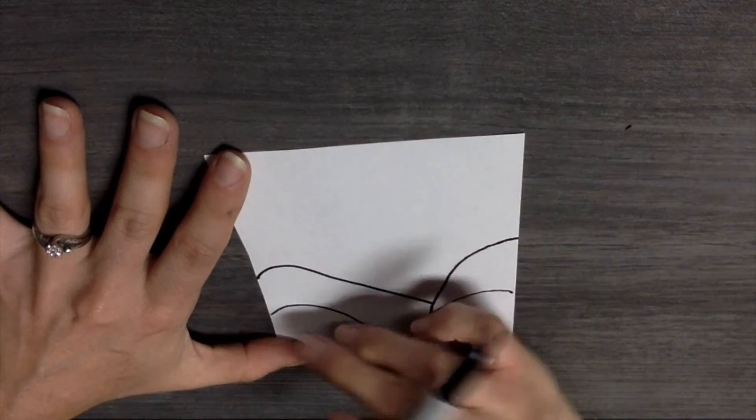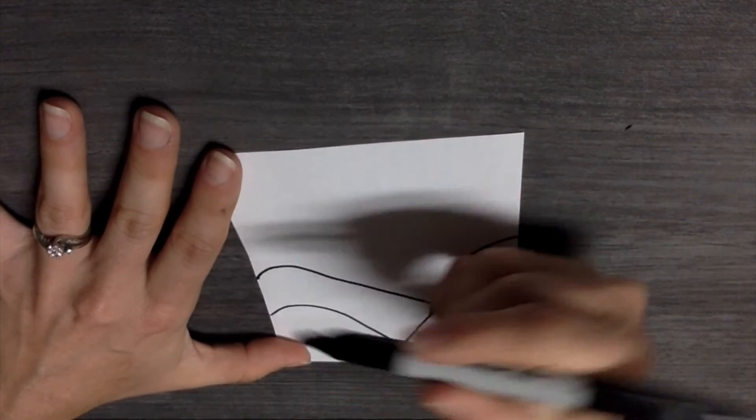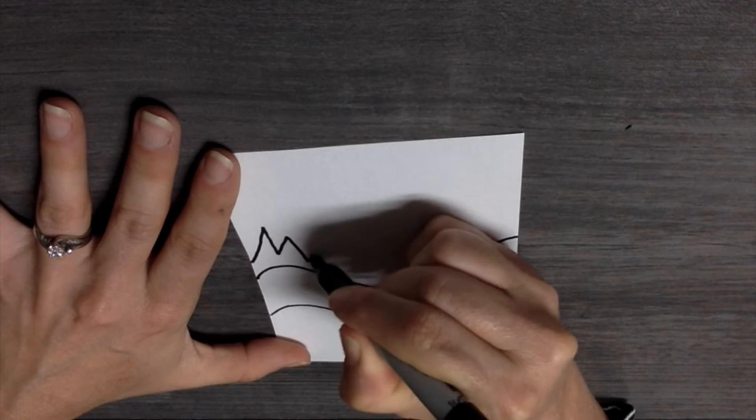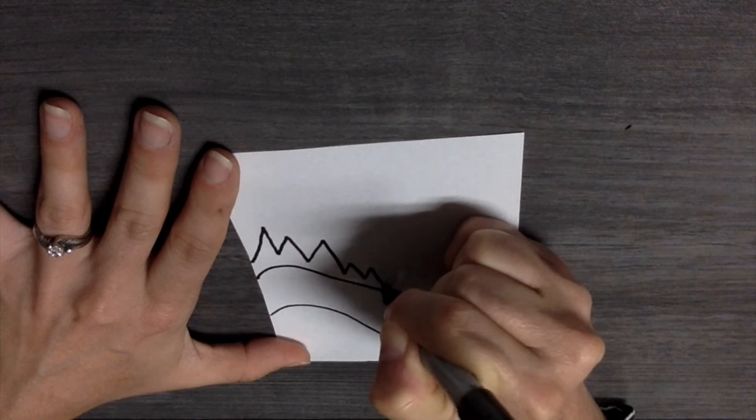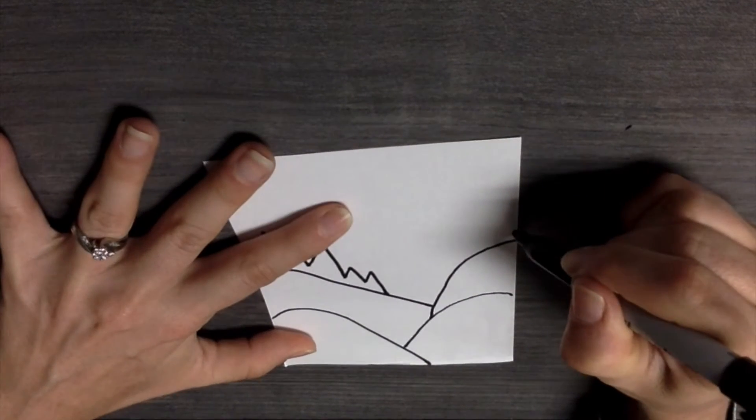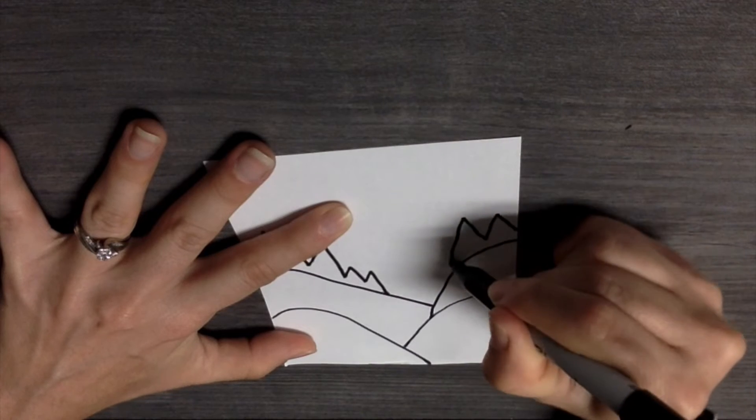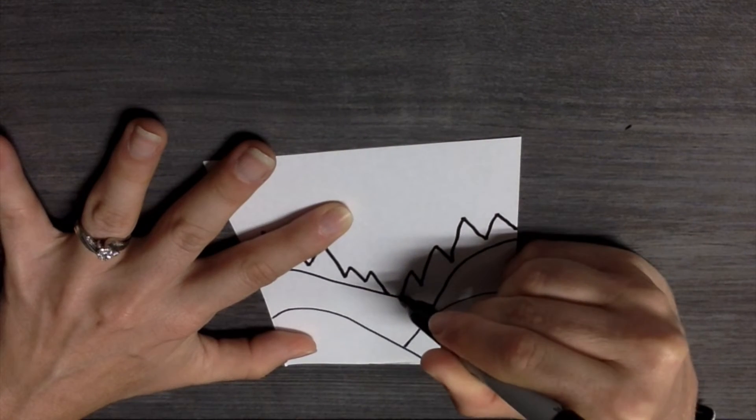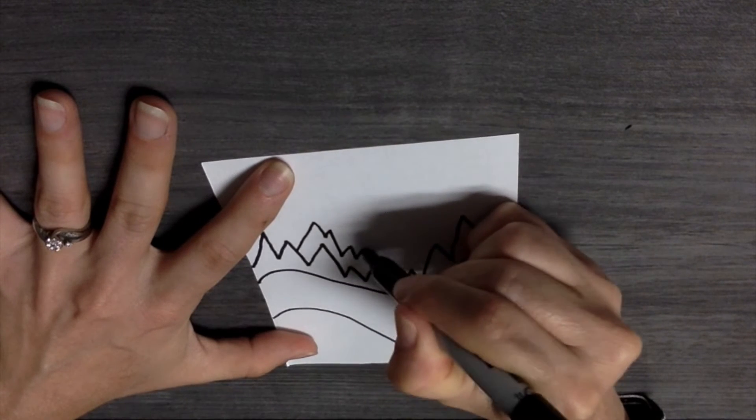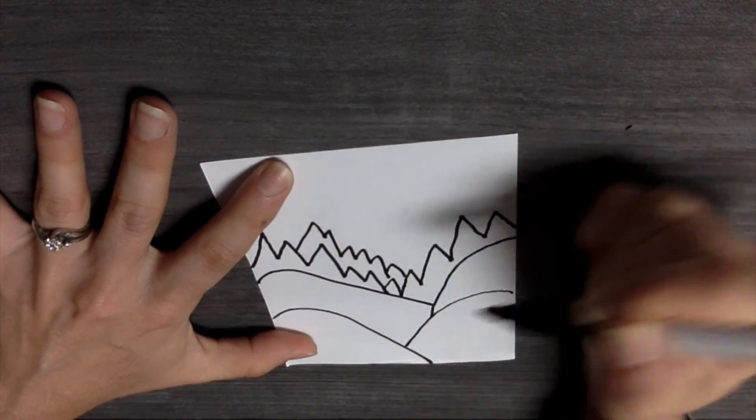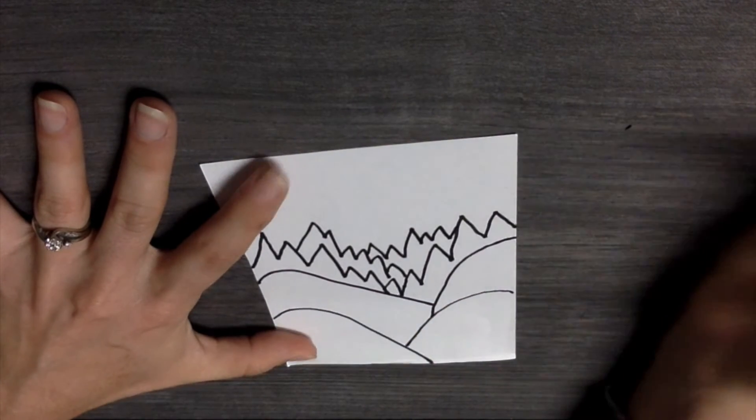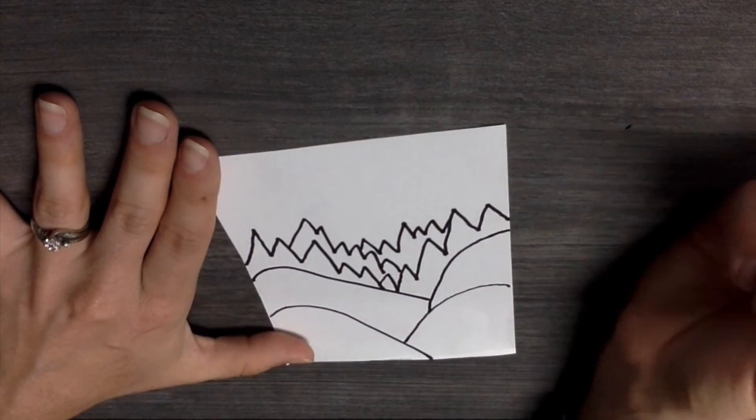Now we are going to add, so we have our hills. Now we are going to add our mountains. We are going to go up and down like a zig zag. Add another one coming from this side. Maybe another smaller in the back. There I have my mountain lines.